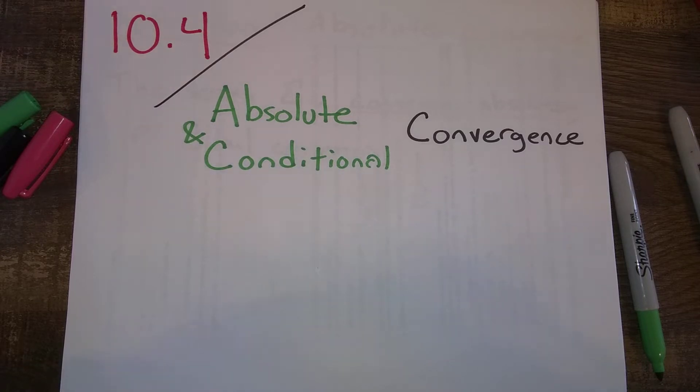In this section, we're going to look at a lot of series that have both positive and negative terms. In fact, some of our series, many of our series, maybe most of our series, are going to alternate plus term, minus term, plus term, minus term, plus term, minus term. And so we're going to examine how to determine if those series converge or diverge.